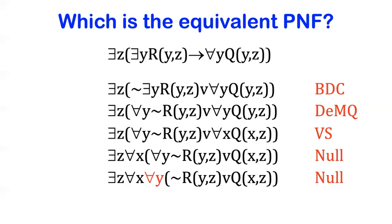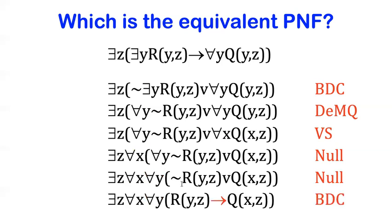This counts as in PNF because all the quantifiers are wide scope. Now this is not the only answer. Maybe you decided to turn this disjunction back into its arrow. So this is also perfectly correct because this is still in PNF. All the quantifiers are wide scope, but this one looks the most like that original sentence because it still has the arrow in it. So that's why I'm doing that final step.